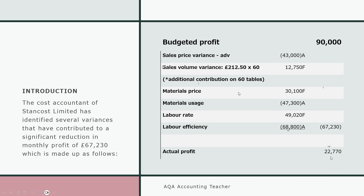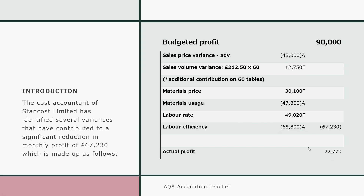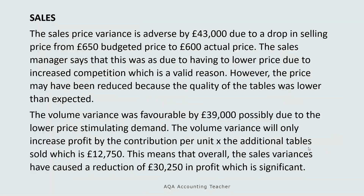That table will enable you to see which variances are the most significant. We can see that labour efficiency has had the biggest adverse effect on profits, closely followed by materials usage and then the sales price variance. The others are favourable. The biggest favourable one is the labour rate variance. We could start netting these off against each other to find the overall variance for sales, materials, and labour. That's how I would start it.